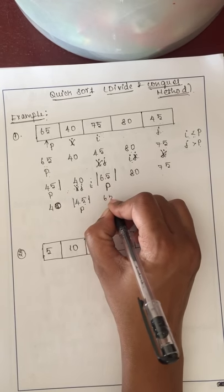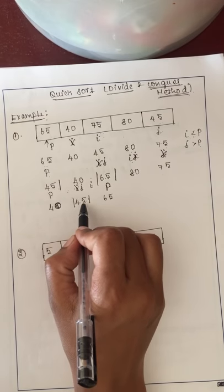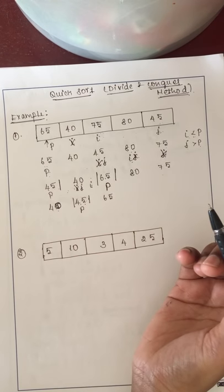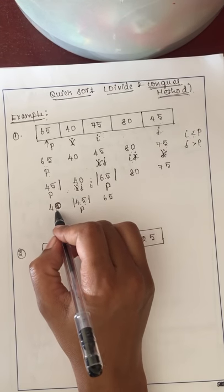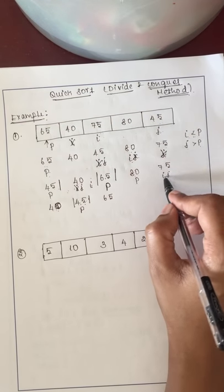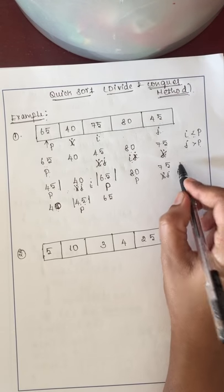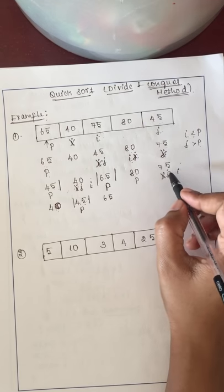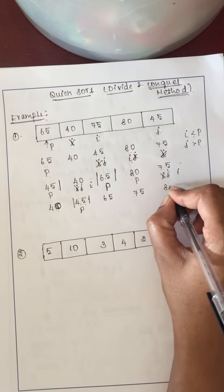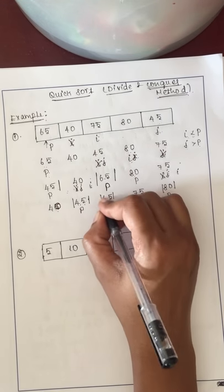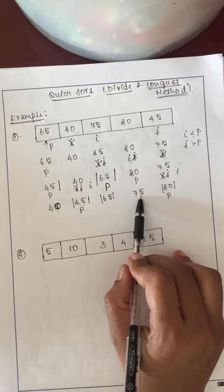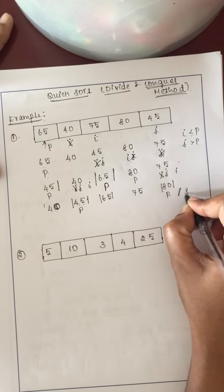Now 45 is in the right position and 65 is also in the right position. To the left of this pivot there is only one element, so no division is needed. For the right sub-array, 80 becomes the pivot and i and j both point to 75. Since i is lesser we increment, but no element remains. j is lesser than the pivot so we swap j with the pivot: 75 comes here and 80 goes there. 80 is now in the right position, and since only one element remains in that sub-array, the list is fully sorted.